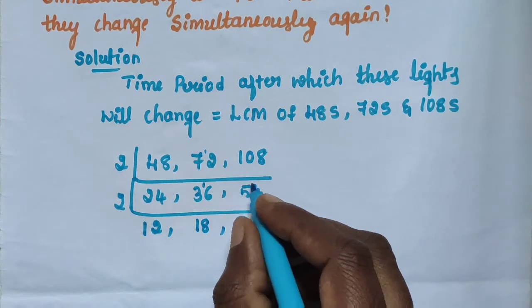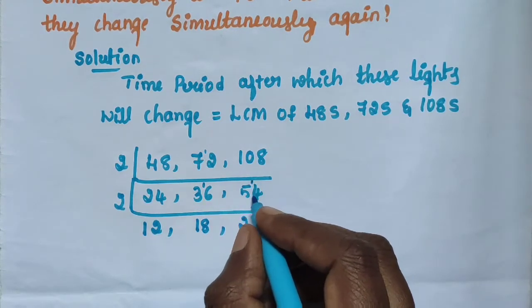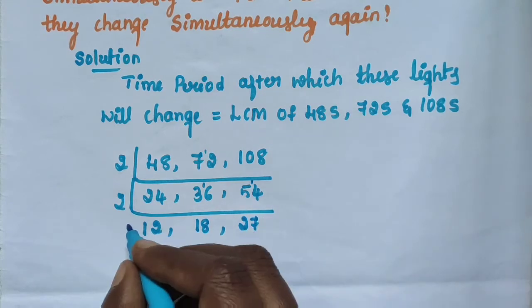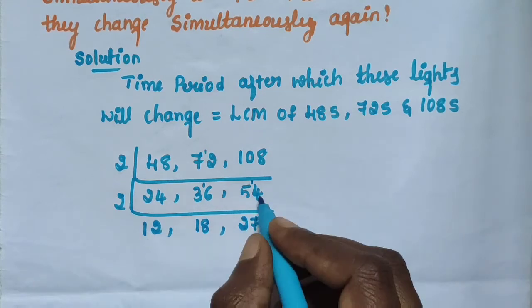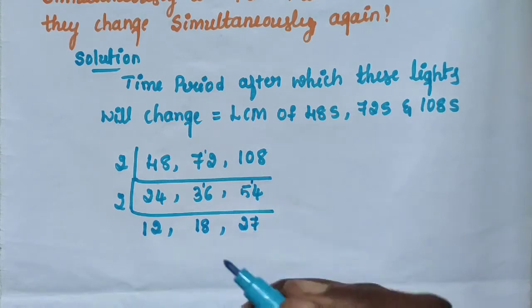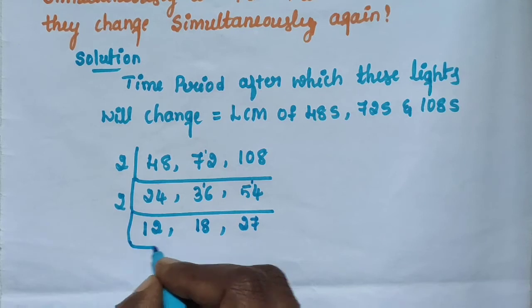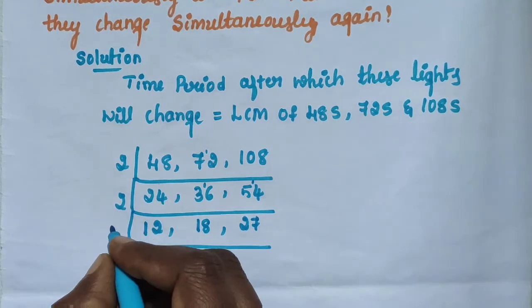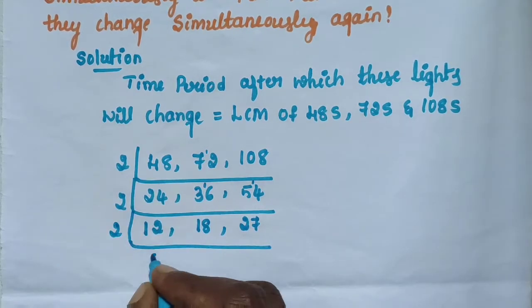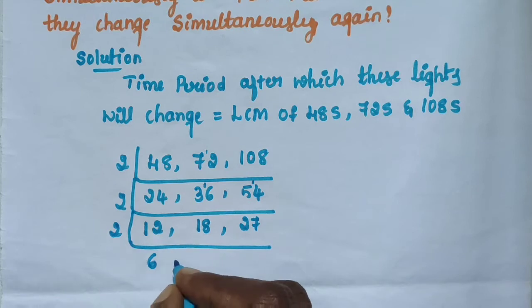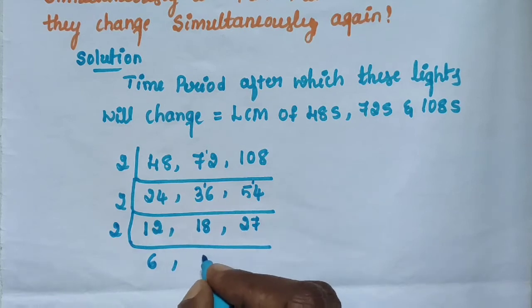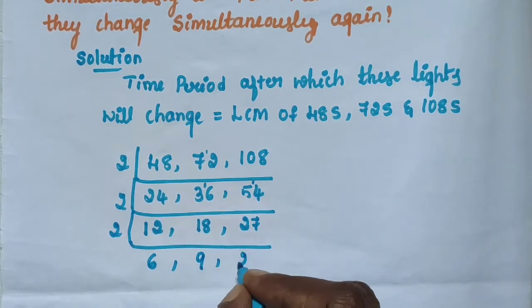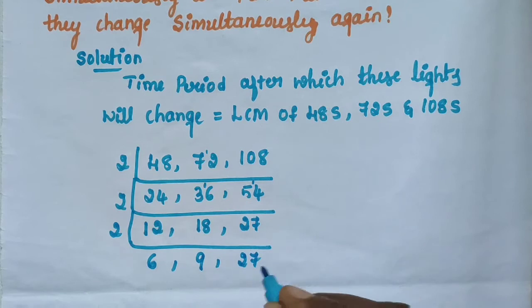Next take 2: 2 twos are 4 carry 1, 2 sevens are 14, 2 twenty-sevens are 54. Next take 2: 2 twos are 12, 2 nines are 18, 27 as it is.